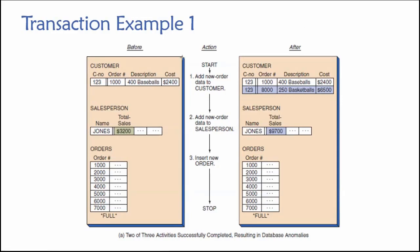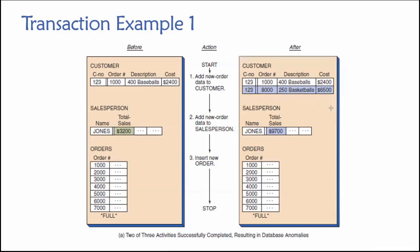Before getting into the example, I want to comment that I don't like this database design. Nobody should be storing order information in a customer table — it's bad database design. We should have a separate table for customers and a separate table for orders. But we'll go with it here, treating this as some sort of denormalized database where we're storing order information in the customer table for illustrative purposes.